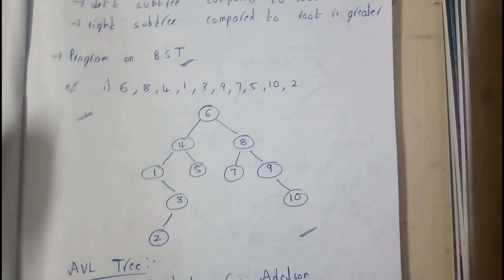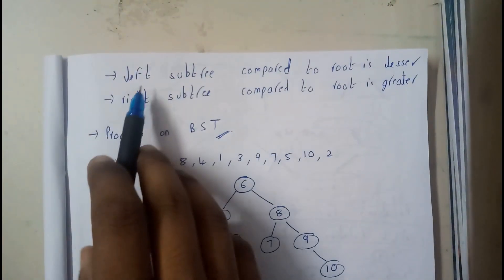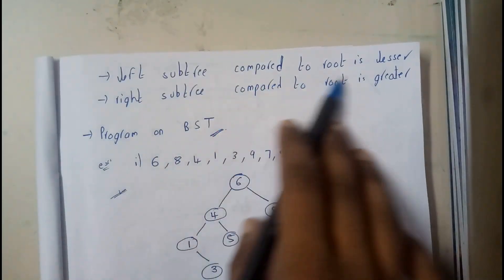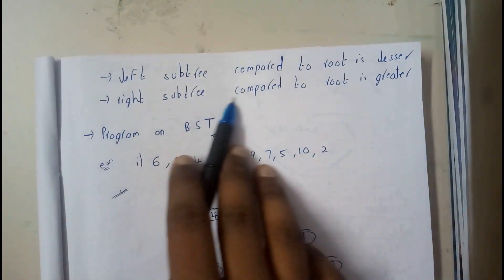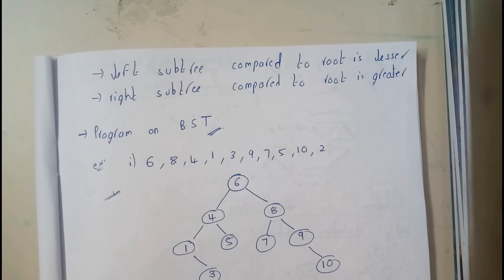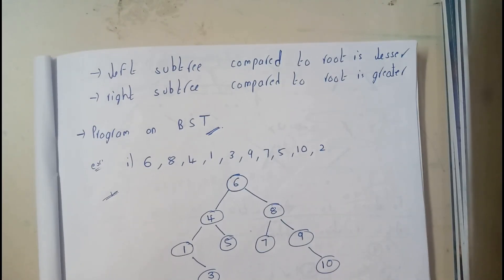Once we are going through the example, it will be clear. So you can just say it in the statements like left subtree compared to the root should be lesser, right subtree compared to the root should be greater. So now we'll be going through a small example guys, so that it will be 100% crystal clear for you.